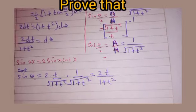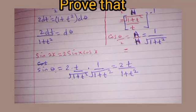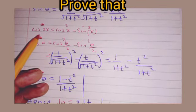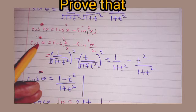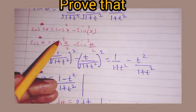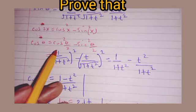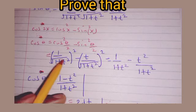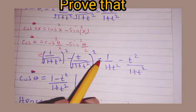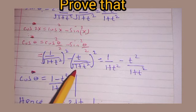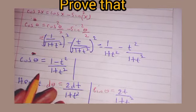We apply the double angle formula for cosine: cos(2x) = cos²x − sin²x, meaning cos θ = cos²(θ/2) − sin²(θ/2). Substituting, cos θ = [1/√(1+t²)]² − [t/√(1+t²)]² = 1/(1+t²) − t²/(1+t²) = (1−t²)/(1+t²).